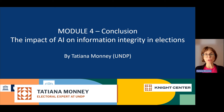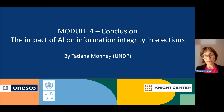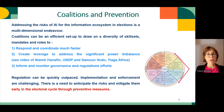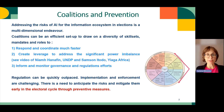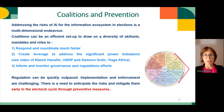Greetings and welcome back. We are reaching the conclusion of this course. In previous modules, we have explored many of the opportunities and challenges of artificial intelligence for the information ecosystem and the elections. For AI to have a positive impact, its risks need to be mitigated. Addressing the risk of AI for the information ecosystem is a multidimensional endeavor. We have seen coalitions producing key results — those specialized in responsible use of AI, in electoral assistance, or in promoting a healthy information ecosystem need to respond and coordinate much faster than before. Coalitions can be an efficient setup to draw rapidly on the diversity of skill sets, mandates, and roles.